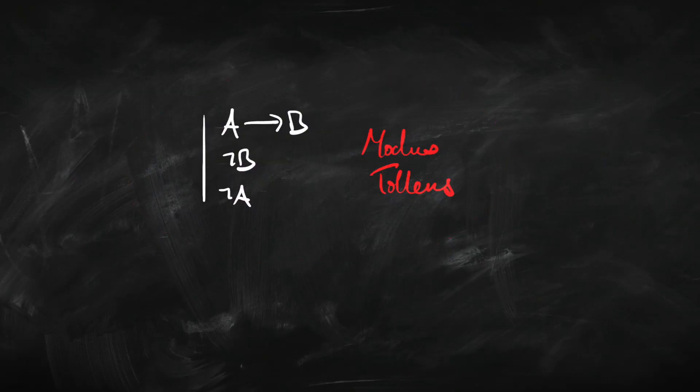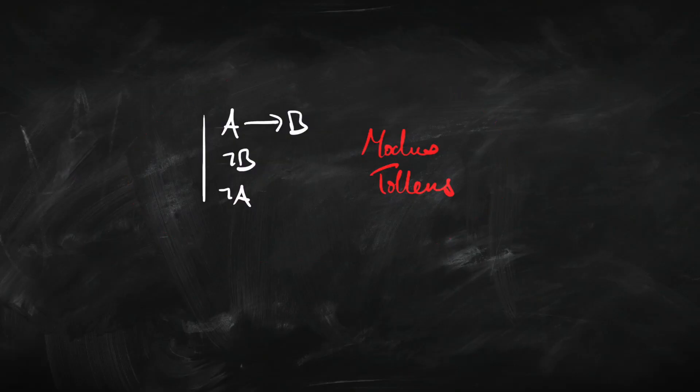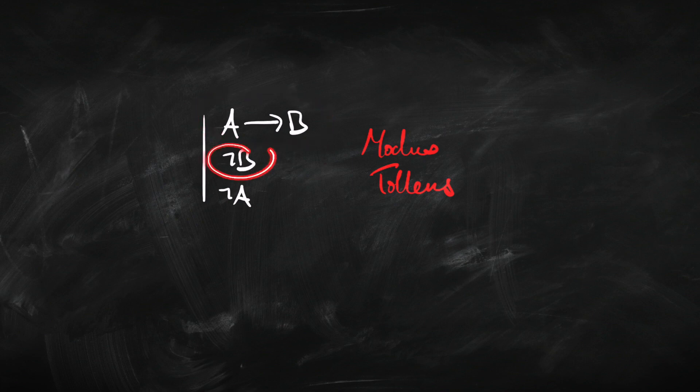So let's look at this rule: modus tollens. You might have come across this already in philosophy. It says from a premise 'if A then B' and a second premise 'not B', you can infer 'not A'. So it's kind of like a companion to modus ponens. Modus ponens says: if A then B, A, therefore B. This one goes: if A then B, not B, therefore not A.